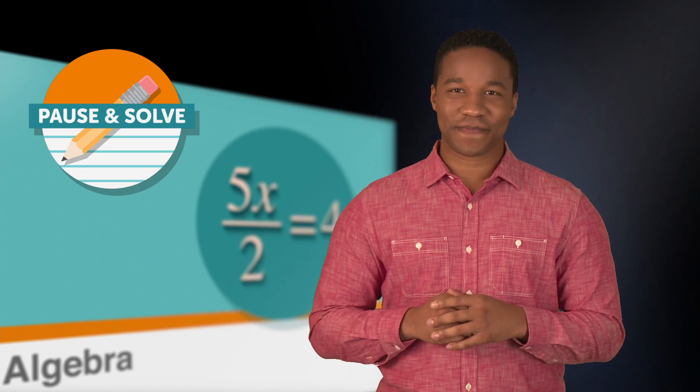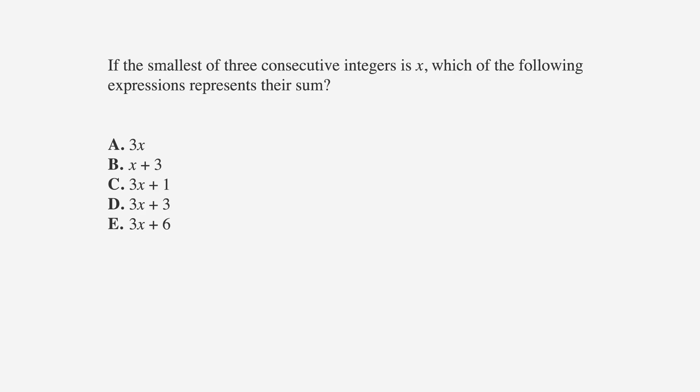Here's the question. If the smallest of three consecutive integers is x, which of the following expressions represents their sum? The answer choices represent the sum of the three integers. Ready? Set. Pause.